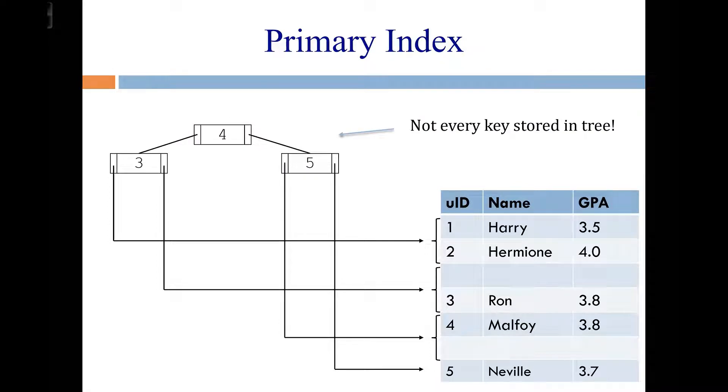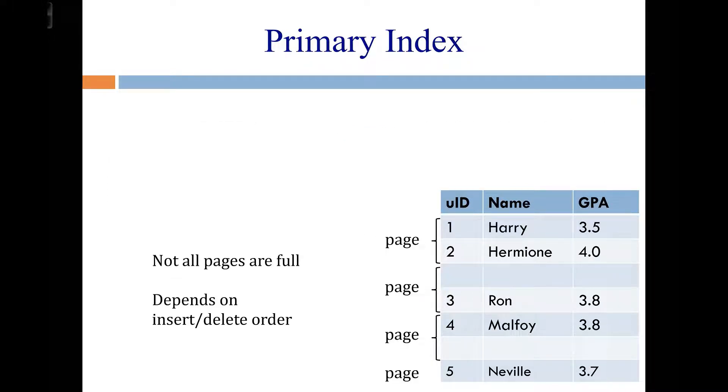And a couple things to notice here. First, not every key is stored in the tree part of the index. So every key does have to show up somewhere in a leaf node, but they do not show up necessarily in the internal nodes. And that's part of what makes B-plus trees compact, and these indexes don't actually take up as much disk space as you might think.